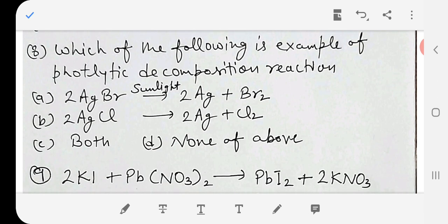Which of the following equation is the example of photolytic decomposition reaction? A and B are two examples of photolytic decomposition. Silver bromide decomposes into silver and bromine, and silver chloride also decomposes into silver and chlorine. The answer is both.